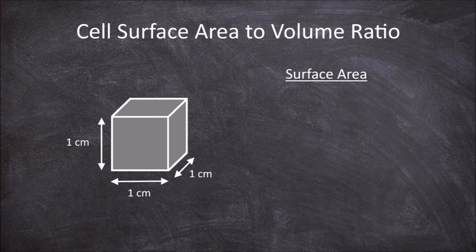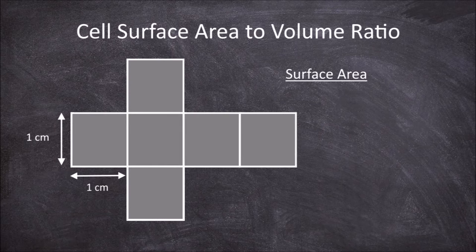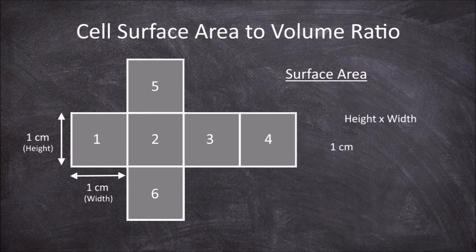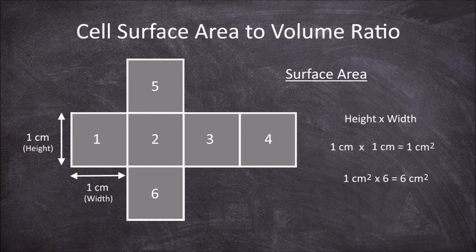The surface area of this cube is the total area that all the faces of the cube make. If we deconstruct the cube we can see that it is made up of 6 sides. The area of each side can be calculated by multiplying the height by the width: 1cm × 1cm = 1cm². To get the total surface area you multiply this by the number of sides — 6 sides — giving a surface area of 6cm².